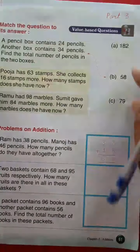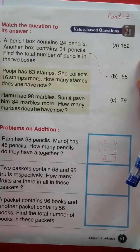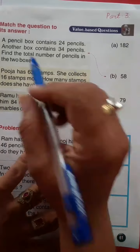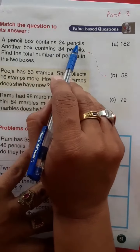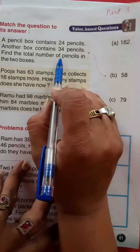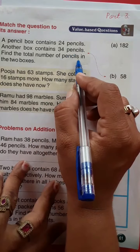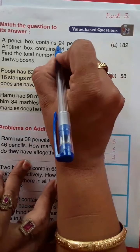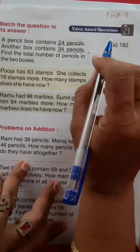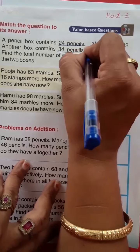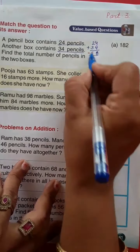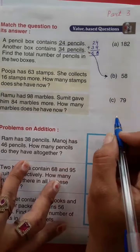Now page number 61 of your book. Match the question to its answer. Aapko ye questions ke answer match karne hain. A pencil box contains 24 pencils. Another box contains 34 pencils. Find the total number of pencils in the two boxes. Yaani ek box me kitni pencils hain? 24. Aur doosre box me kitni hai? 34 pencils. Toh agar hum isko plus karte hain, 24 plus 34, toh ye kitna aata hai? 58. Toh kahan se match karenge hum ye? 58 se.